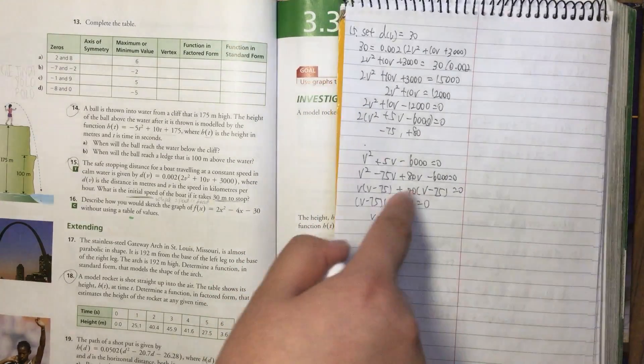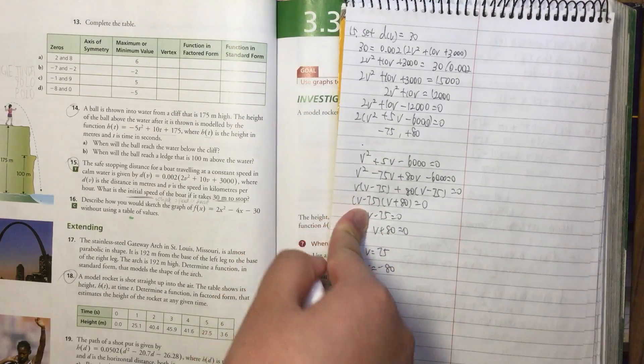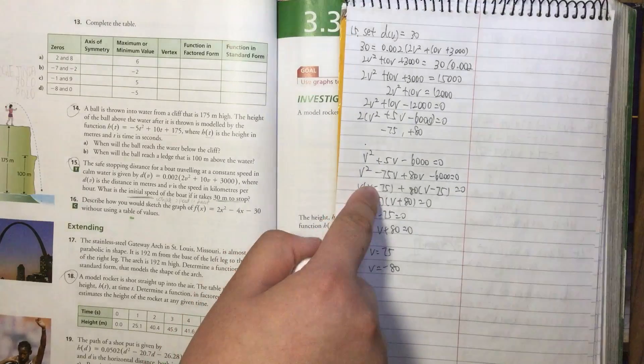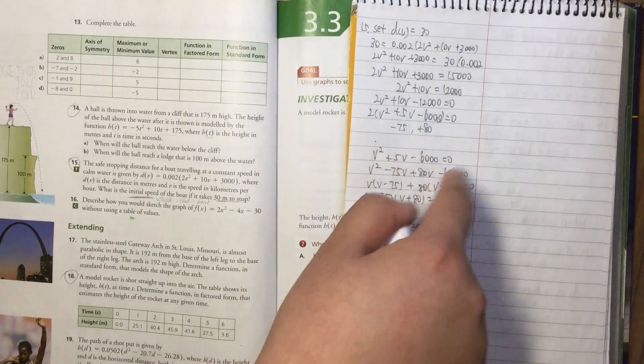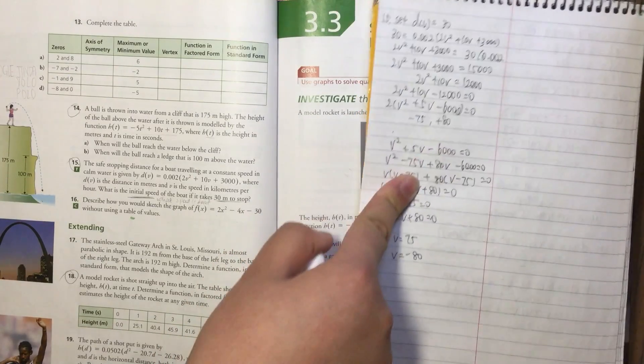For this side we take out 80. After that we factor and take out V - 75 because they are the same, and we find out V + 80. Then we set both of them equal to 0.